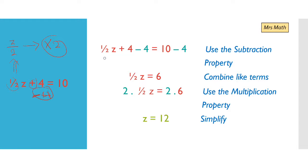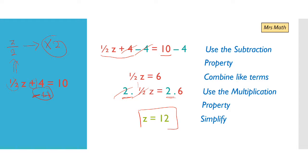The first step: write the original equation — half z plus 4 equals 10. Use the subtraction property to isolate the variable from the plus 4. So plus 4 minus 4 equals 0, and what remains is half z equals 6. Still, z is not by itself. We need to isolate it from the division by 2, so multiply both sides by 2. Two times one-half cancels to get 1, so z equals 2 times 6 equals 12. This is the final answer — the solution of the equation.